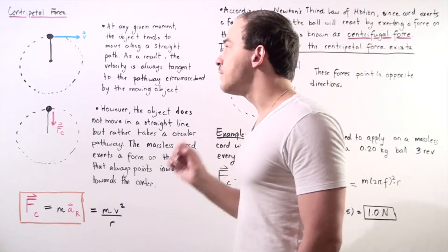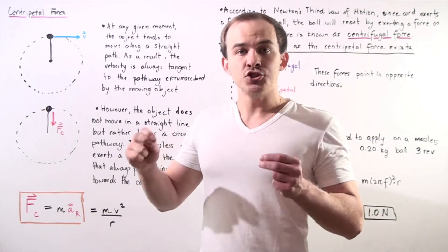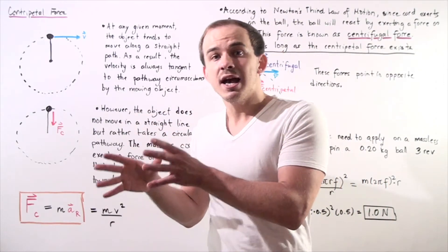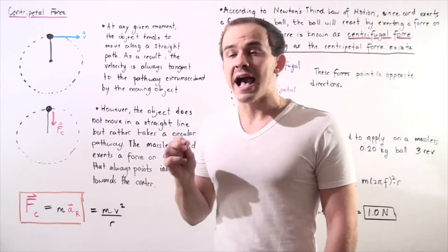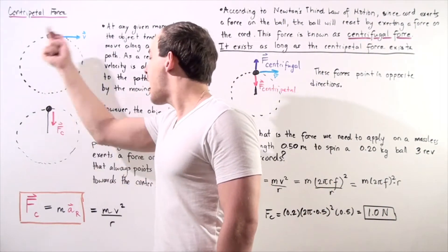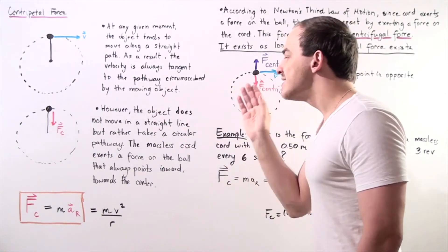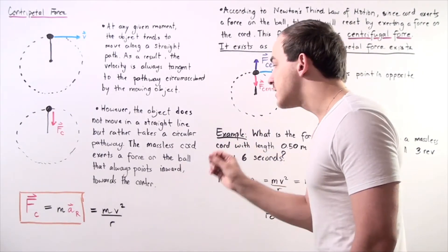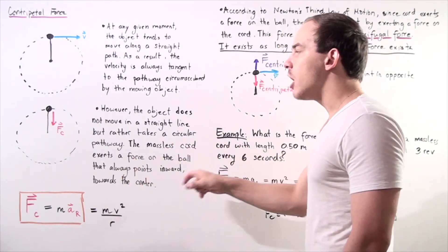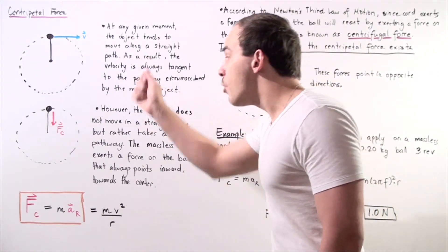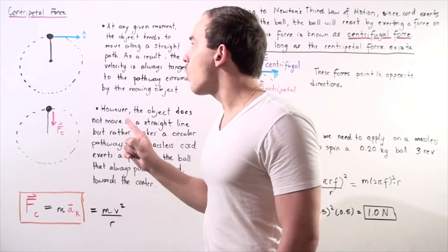What exactly is this force? When we spin our ball, we pull on the string, creating tension in the string. That tension exerts a force on our ball, pulling it inward, and that is exactly what causes our ball to accelerate and move in a circular pathway. The massless cord exerts a force on the ball that always points inward toward the center of our circular pathway. This force is known as centripetal or radial force.